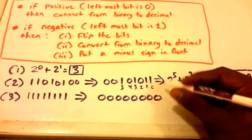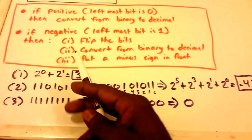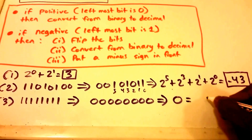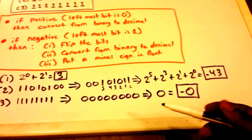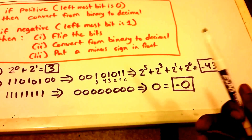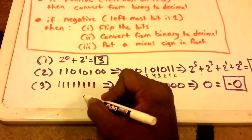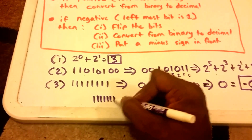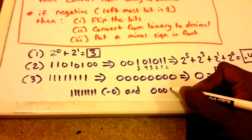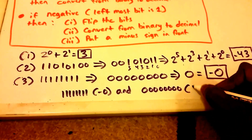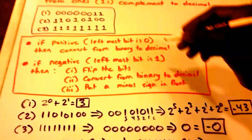Converting 00000000 from binary to decimal gives us zero, and putting a minus sign in front gives negative zero. This might seem strange, but the ones complement has two representations of zero: 11111111 is negative zero and 00000000 is positive zero — just like sign-and-magnitude representation.